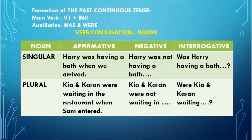Now, looking at the formation of the past continuous tense, its main verb is V1 plus ING — these are called present participles. The auxiliaries we are going to use are 'was' and 'were'. So the formula is: was or were plus V1 plus ING. That is its formation.